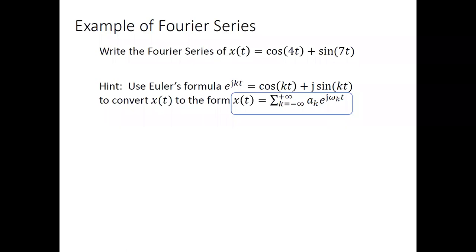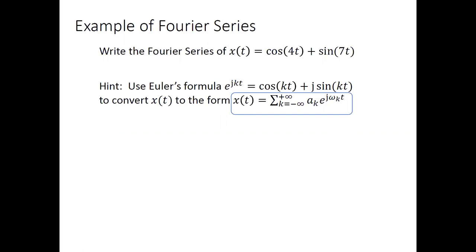I'll give you a hint that we can use Euler's formula. I got a question: are the signals we encounter usually periodic? No — I'm only saying that if we are given a periodic signal, practically these periodic signals can be expressed as a Fourier series. There are very rare special cases where even a periodic signal cannot be written as a Fourier series, but those are outside the scope of this class.